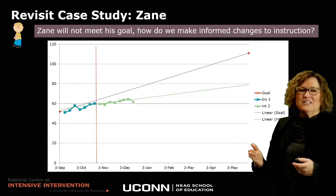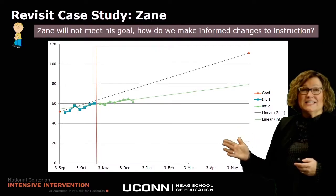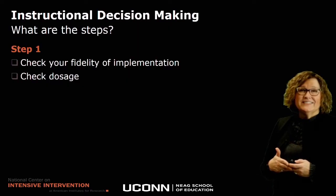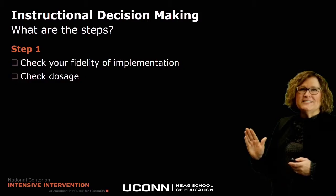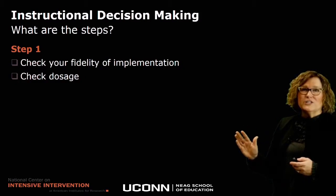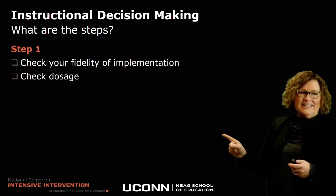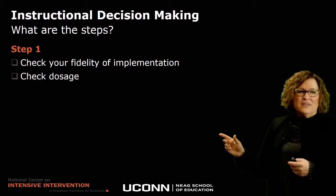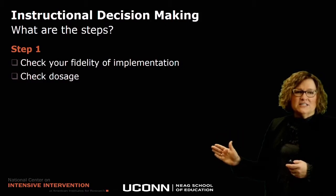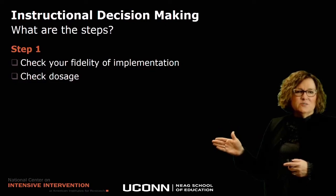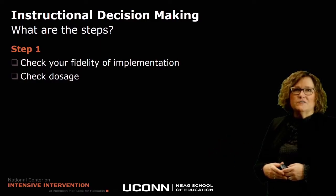Remember, when looking at graph data, it's all about what that data is telling the teacher about a change she can make in instruction to benefit the student. The first step in thinking about what change to make is: one, did I implement the intervention with fidelity? And two, did the student receive the intervention as often as intended? If the answer is no to either question, we need to adjust our implementation or make adjustments to the student's schedule to ensure the student is receiving the intervention as often as intended.